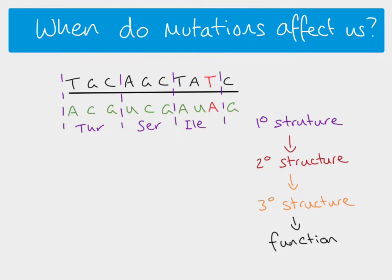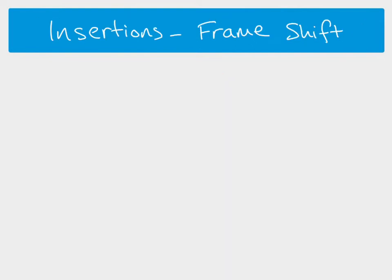Another example: returning to our original DNA, RNA and primary structure, here a thymine is substituted in this position, which again causes a change in the RNA, but this time instead of coding for an amino acid, the RNA codon UCA is a stop codon. If this mutation happens, we're definitely going to get a big effect on the protein because it will stop the rest of the sequence from being translated, meaning the protein would probably not exist at all.